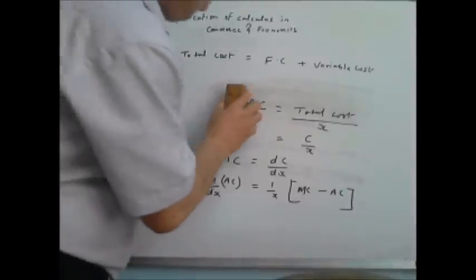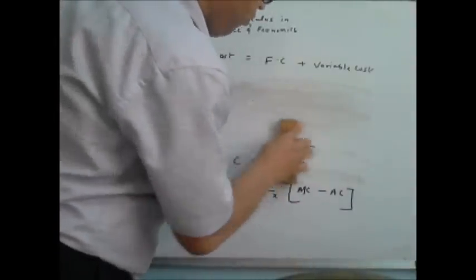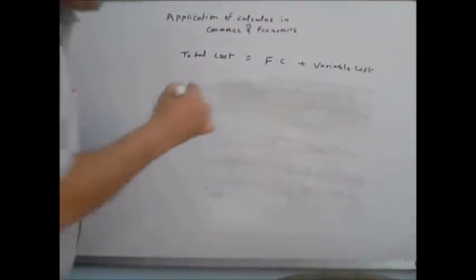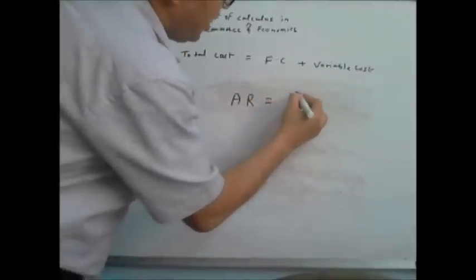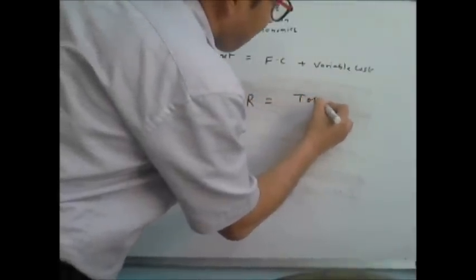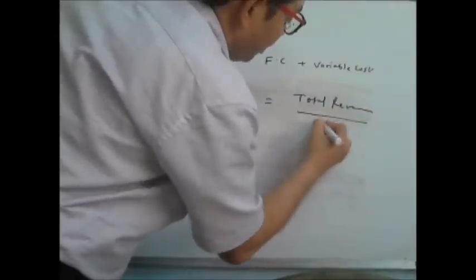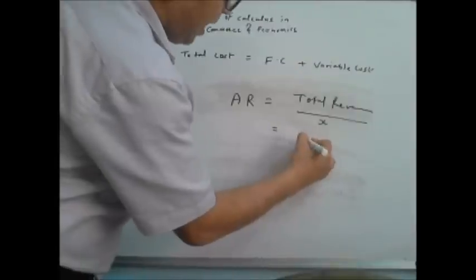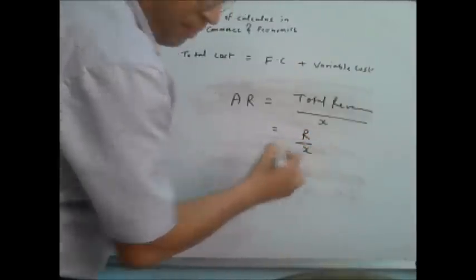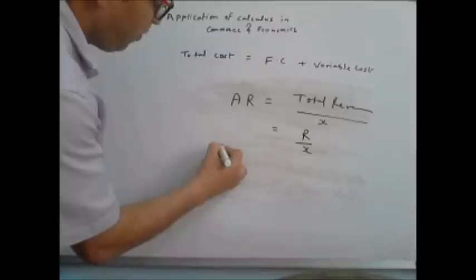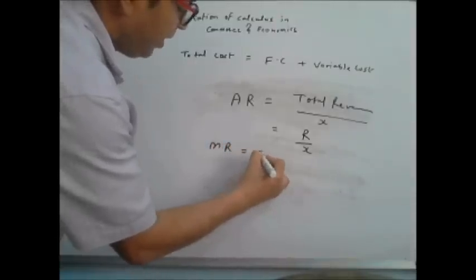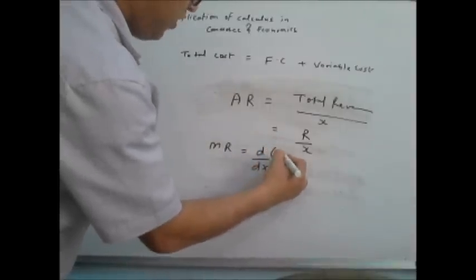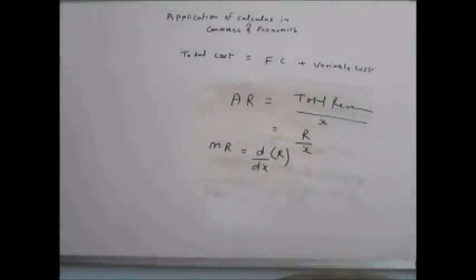The same story goes with the revenue function. Average revenue is total revenue divided by the number of units sold, which is R(x)/x. Marginal revenue is d/dx of total revenue — this is marginal revenue.